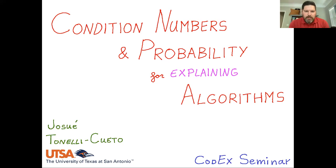Welcome back to Codex. Throughout the summer, Codex is featuring graduate students and postdocs who were nominated to speak by their senior colleagues. Today we're pleased to have Josue Tonelli-Cueto as the first speaker in this series. Josue is currently a postdoc at UT San Antonio, and in the fall he'll start another postdoc at Johns Hopkins. Today he'll tell us about condition numbers and probability for explaining algorithms. Take it away, Josue.